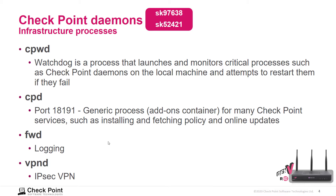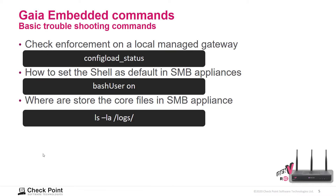CPD uses port 18191 and is used for many services such as installing and fetching policies. FWD is used for logging, and VPND is used for IPsec VPN. You can refer to the relevant SKs for further information. Here are some basic commands for troubleshooting — if you want to check enforcement on a locally managed gateway, you can run the config_log_status command.